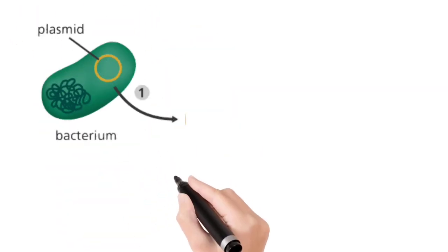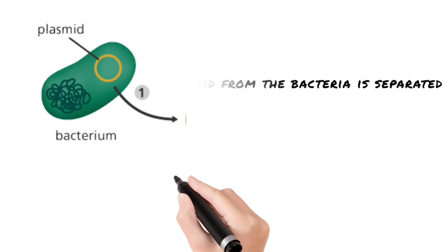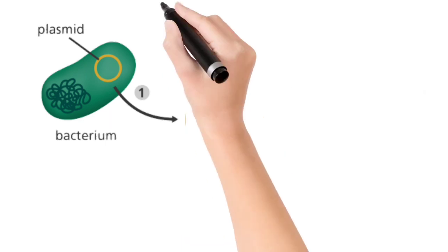A bacterial strain is chosen, then the plasmid, which is an extra circular DNA, is extracted from the bacteria which can replicate itself to number of copies.